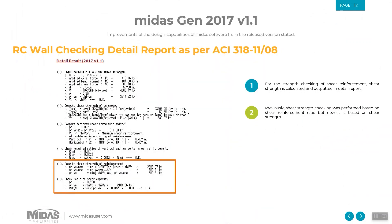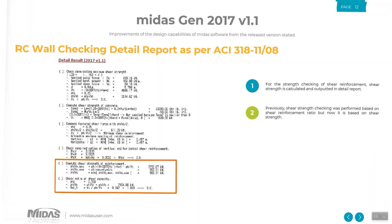For the Midas Gen 2017 version 1.1 release, previously shear strength checking was performed based on shear reinforcement ratio, but now it is based on shear strength, updating in accordance with the design code such as ACI 318-11.